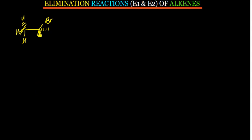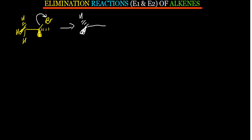For the E1 reaction, the first thing that happens is that the bond between the alkyl carbon and the bromine automatically breaks by itself. As a result, we form a carbocation — that carbon becomes positively charged and now only has three bonds. This carbocation is the intermediate formed after ionization.